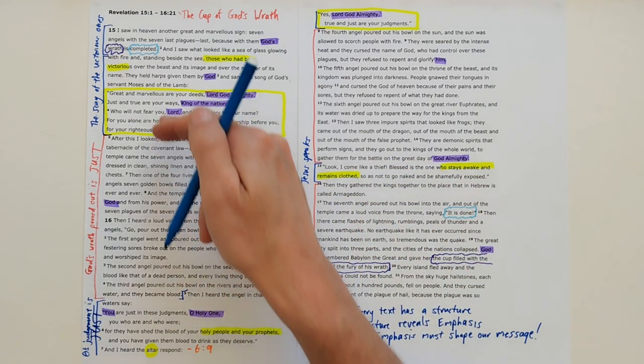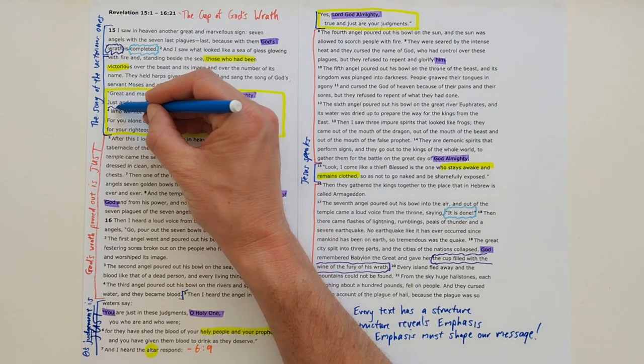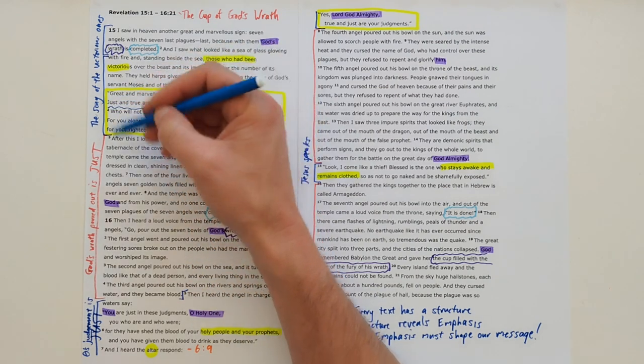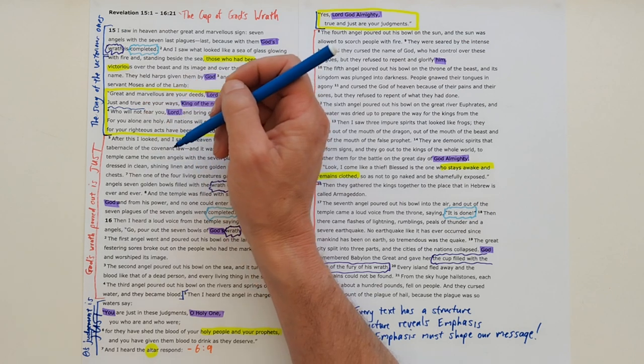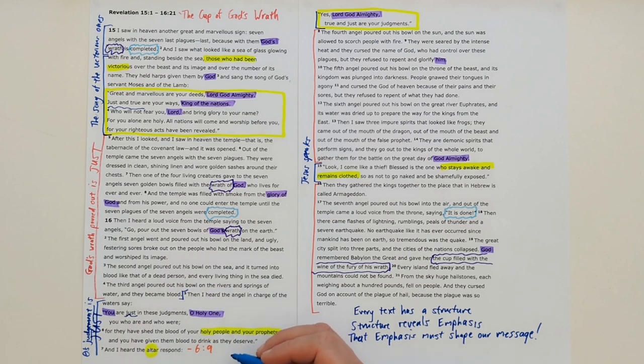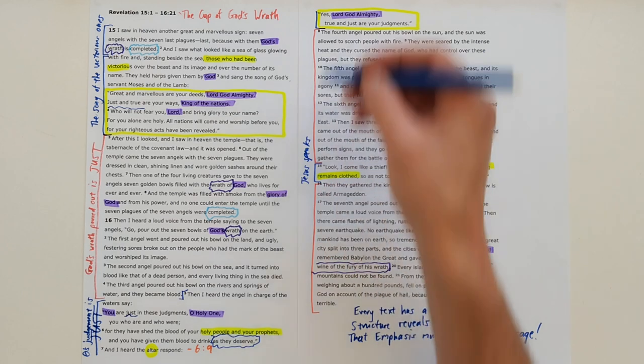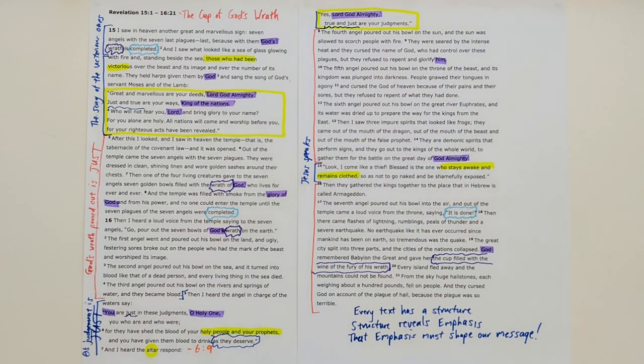And then Jesus speaks to them and he says stay awake and remain clothed. And something we see in the first two of these responses is this repetition that what we're seeing in this section is just and true. It is the just and true judgment of God. You are just, they are getting as they deserve. And again, true and just are your judgments.